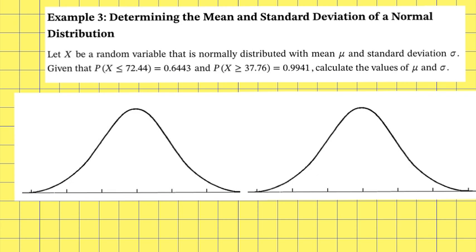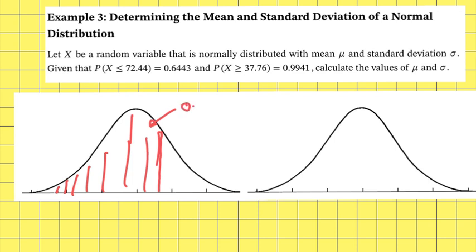Let's fill in our two normal distribution curves. The first one has a probability of 0.6443 for x less than or equal to 72.44, so the shaded area is 0.6443. The mean is equal to zero and the standard deviation is equal to one.